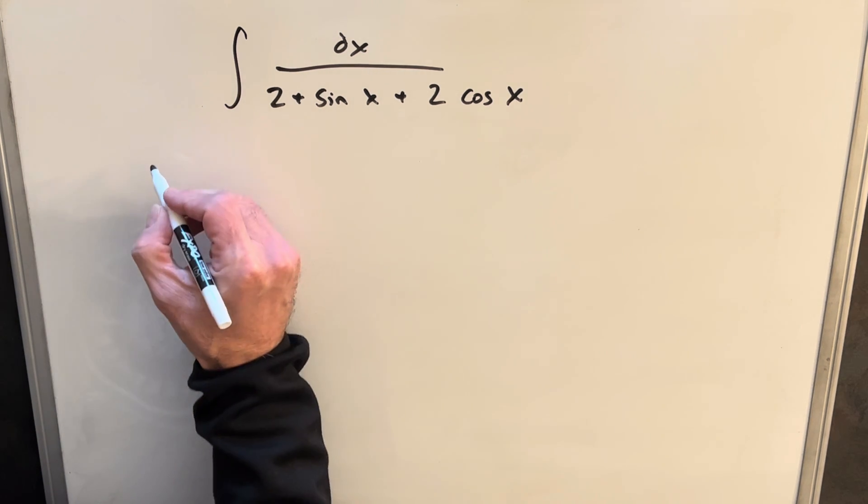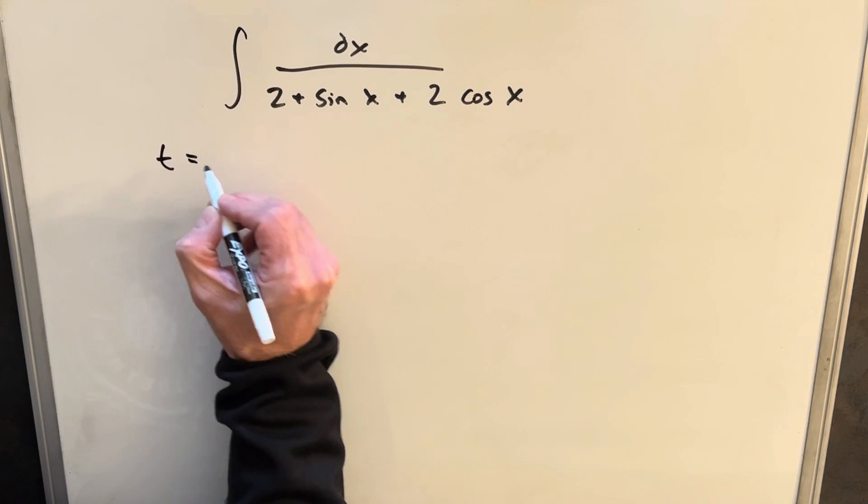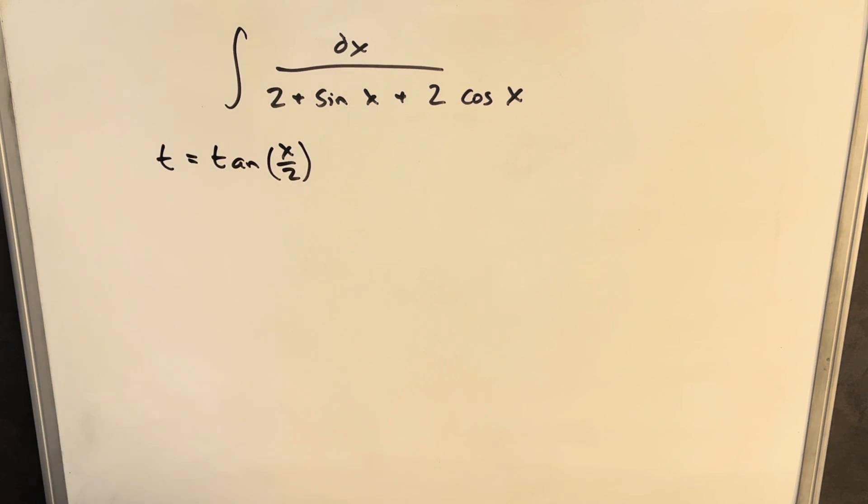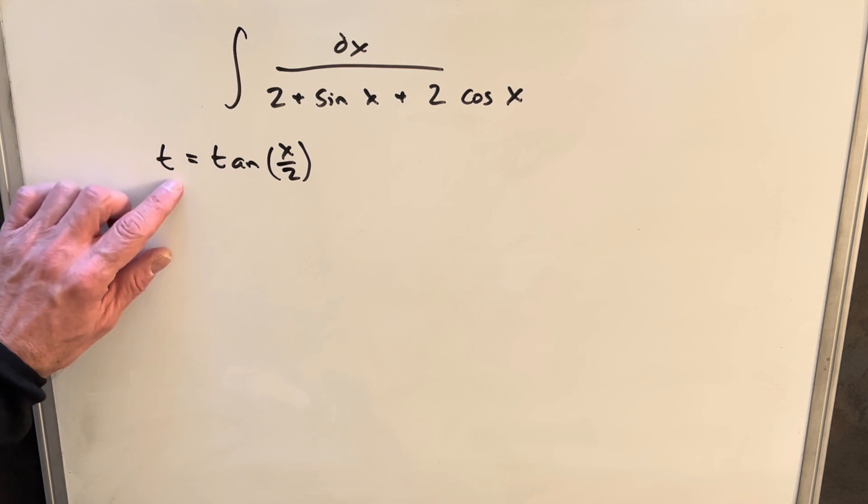What I did is I wanted to make the substitution t equals tan of x over 2. And this here might seem like it just came out of nowhere, or I'm crazy because we don't even have tangent and we don't have x over 2. So everything seems wrong about this.